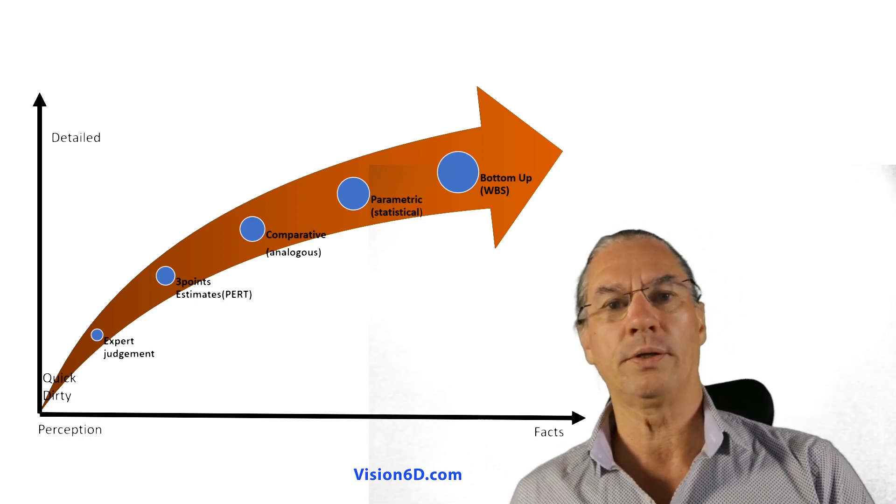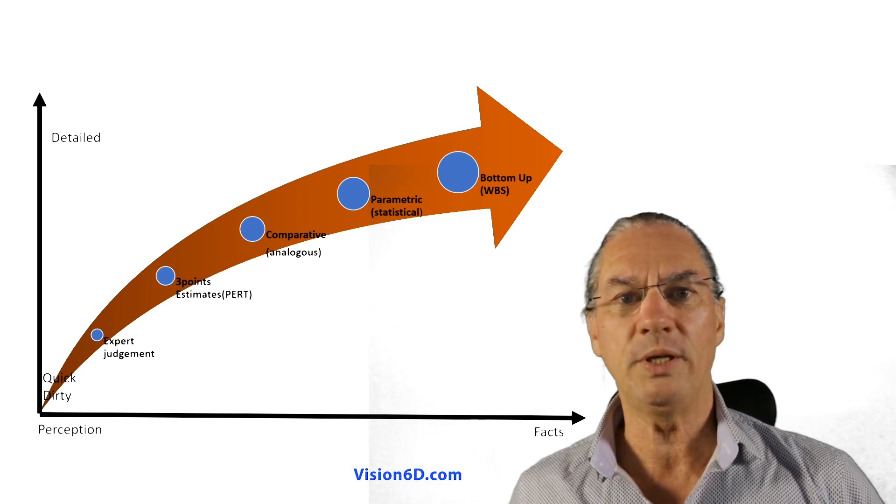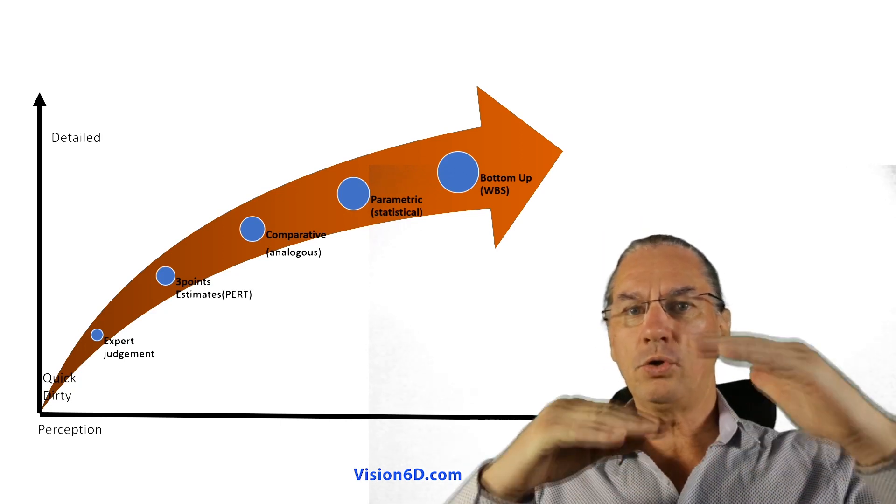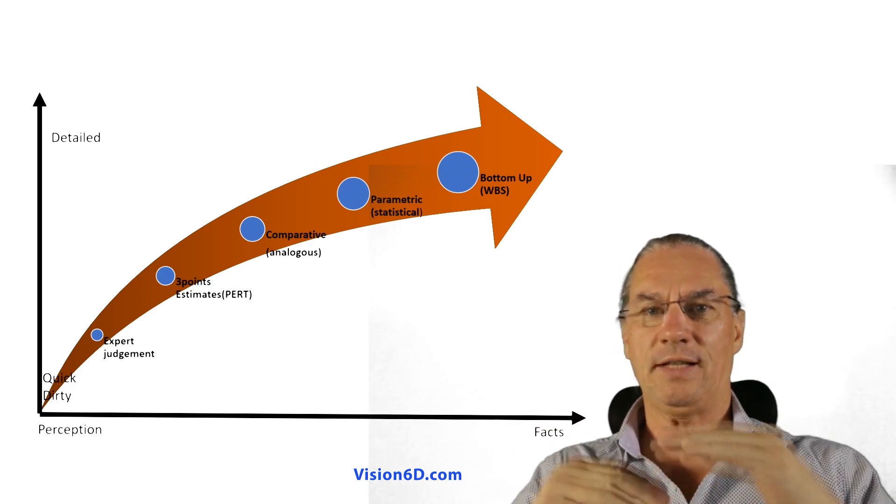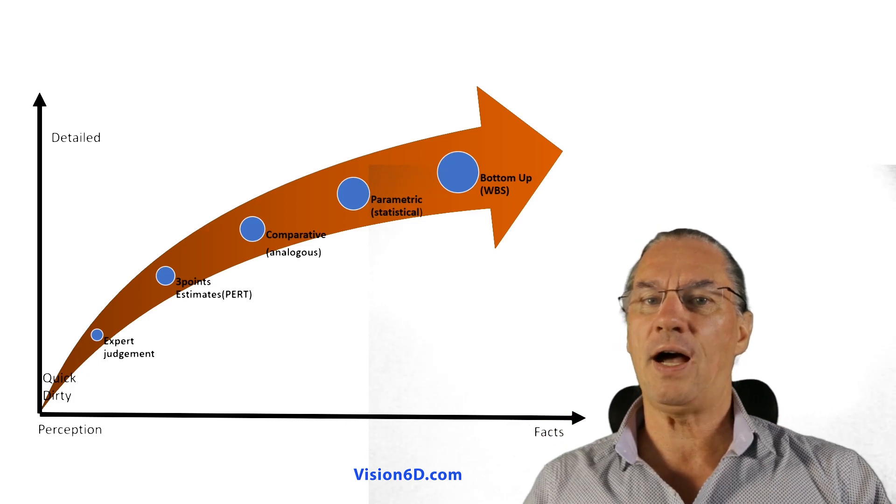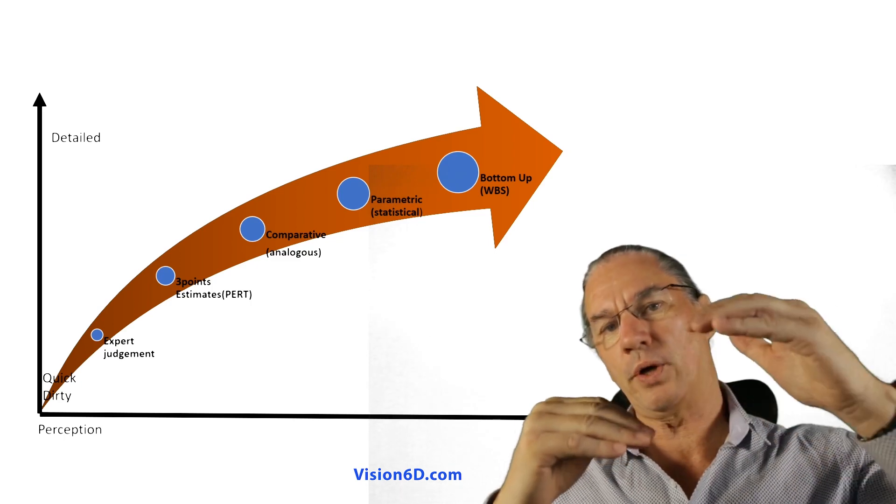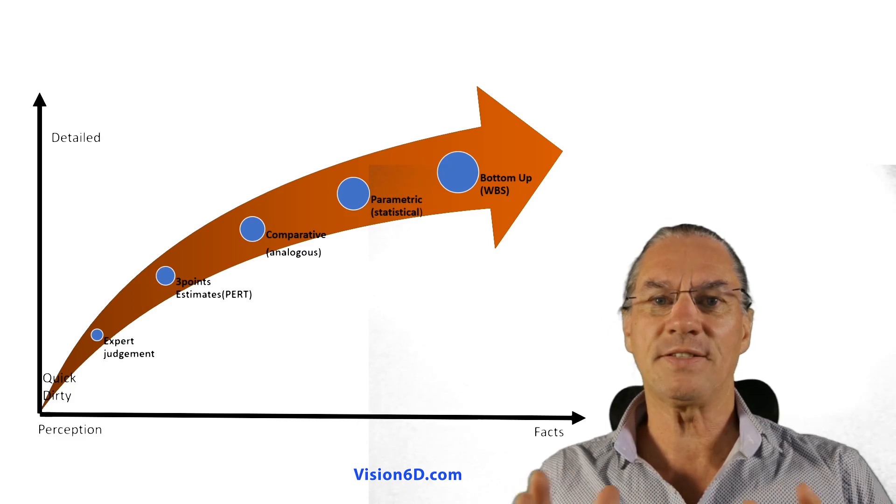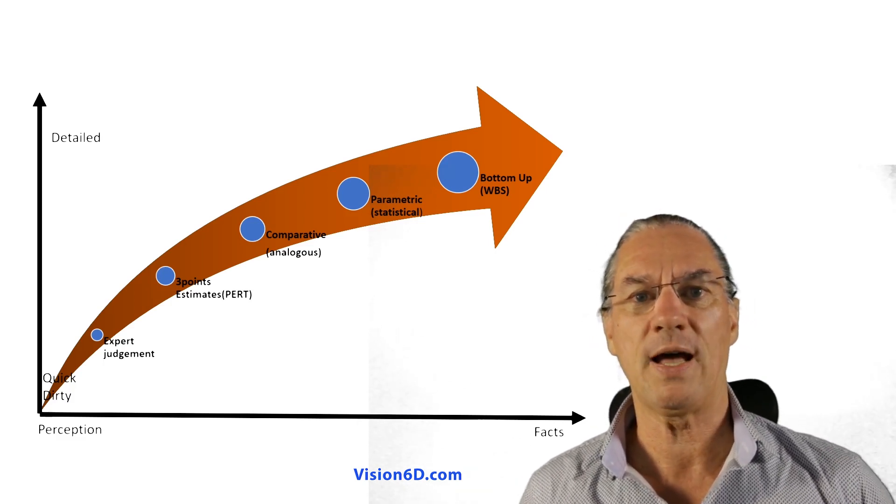The last one, which is the one called bottom up, in which we use WBS, the work breakdown structure. So we are going to break all the work elements in little chunks that we are able to really say, okay, this I know, I need so many hours to do it. And all those chunks, we are going to sum them up. And in the end, you have the estimation of the complete project as well in time as in cost.